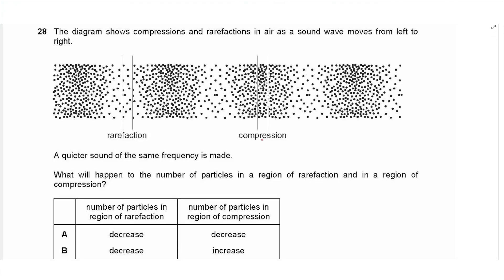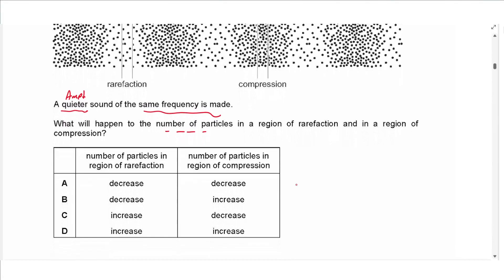Question 28: A sound wave moves with compressions and rarefactions. A quieter sound has a lower amplitude but the same frequency, so separation between compressions and rarefactions stays the same. A quieter sound does not push molecules as forcefully, so compressions are less dense and rarefactions are less empty. Rarefactions contain more molecules and compressions contain fewer molecules. Answer is C.